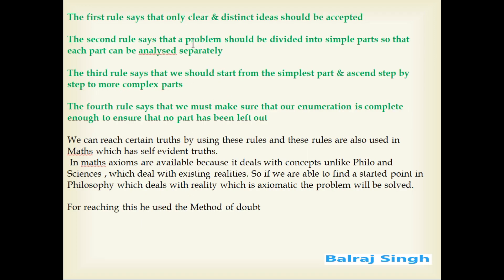The first rule, the rule of criteria, says that we should accept only those ideas which are clear and distinct. The second rule says that we should divide a problem into simple parts so that each and every part can be analyzed separately. The third rule says that we should start from the simplest part and then go up towards the more complex ones. The fourth rule says that we should count all the parts to ensure that no part has been left out of our analysis.